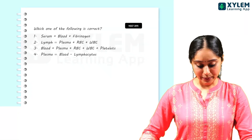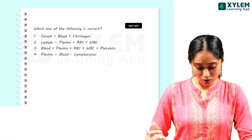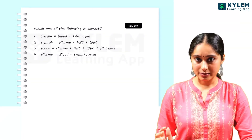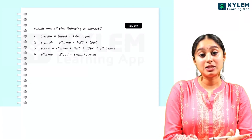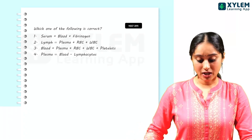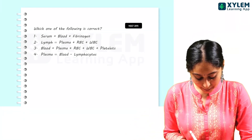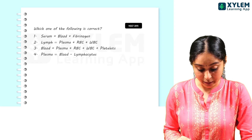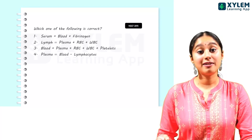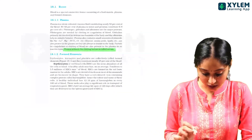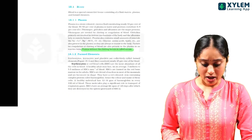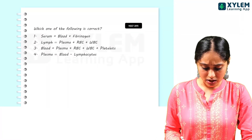First question: which one of the following is correct? Blood components are clear. We know blood consists of plasma and formed elements. Formed elements include different types of cells. Now option 1 says serum is blood plus fibrinogen — that is clearly wrong. From NCERT, plasma without clotting factors is called serum. Option 2 says lymph is plasma plus RBC plus WBC — lymph does not contain RBC, so option 2 is also ruled out.